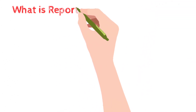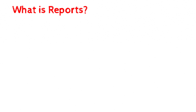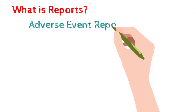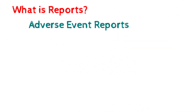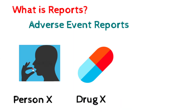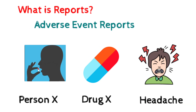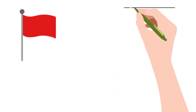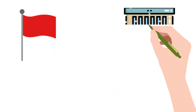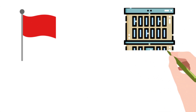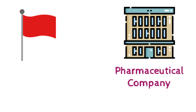We will start with: what is a report? A report in Pharmacovigilance is nothing but the adverse event report. To understand this, let's consider an example. Person X took Drug X, manufactured by Company X, and experienced an adverse event — headache. In this case, you can raise the concern of Drug X causing headache with the manufacturer, Pharma Company.